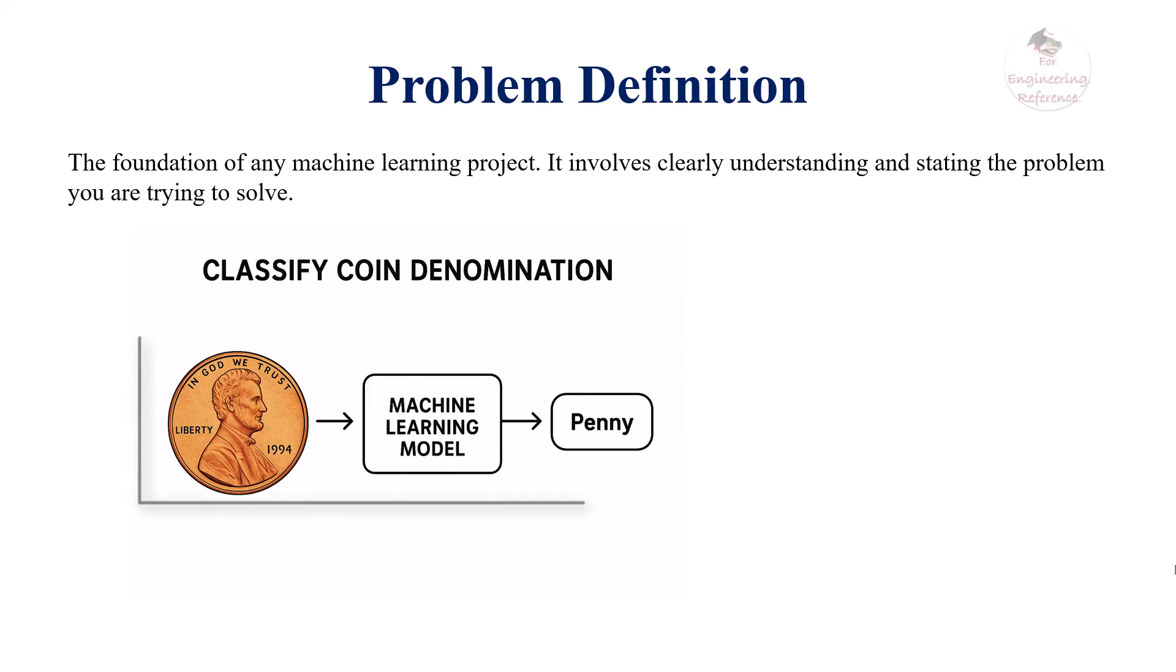For example, we might want to classify the denomination of a coin based on its image. Without a well-defined problem, the entire pipeline becomes unfocused.